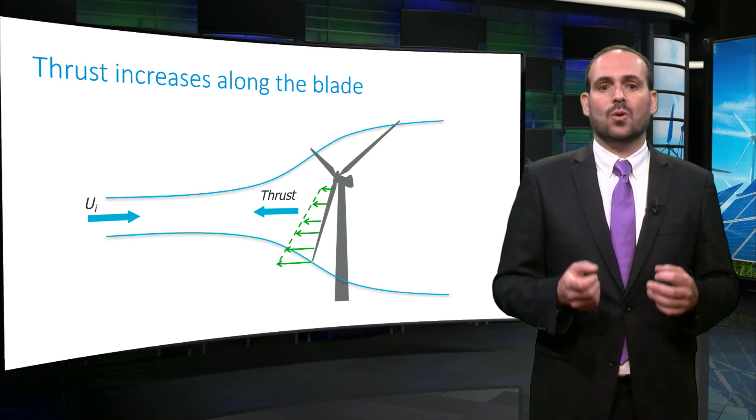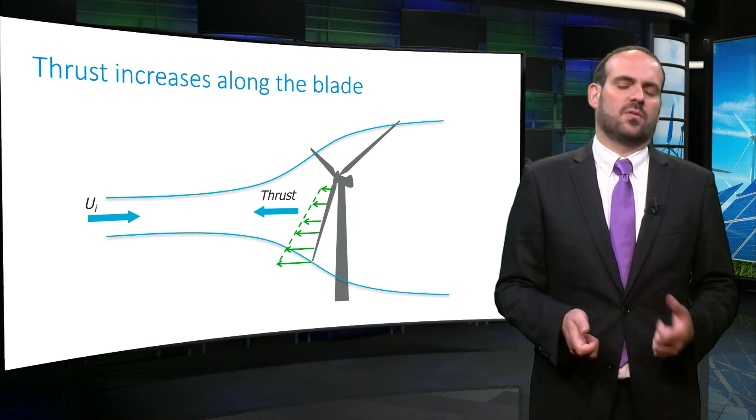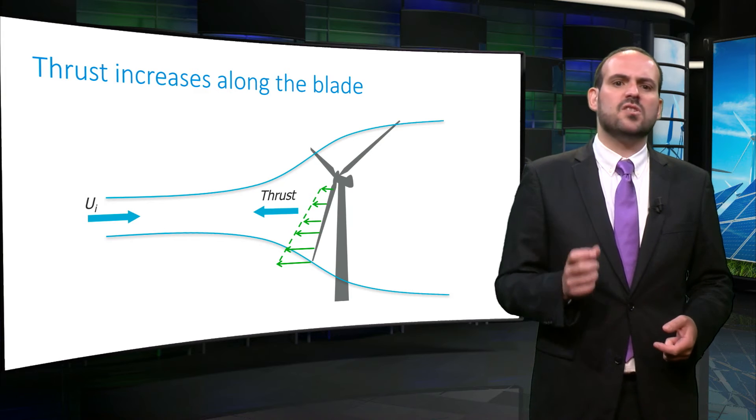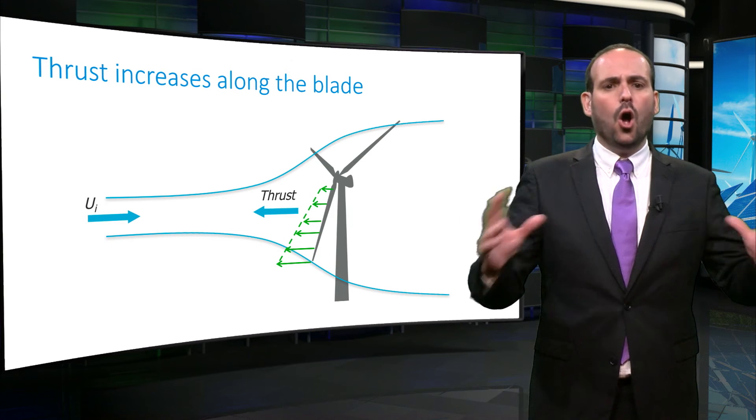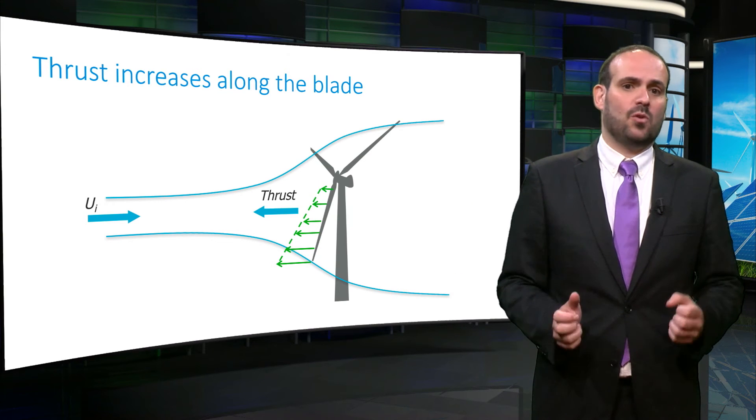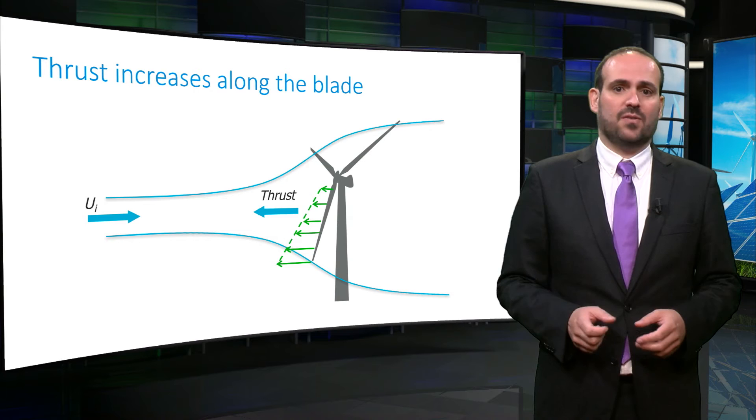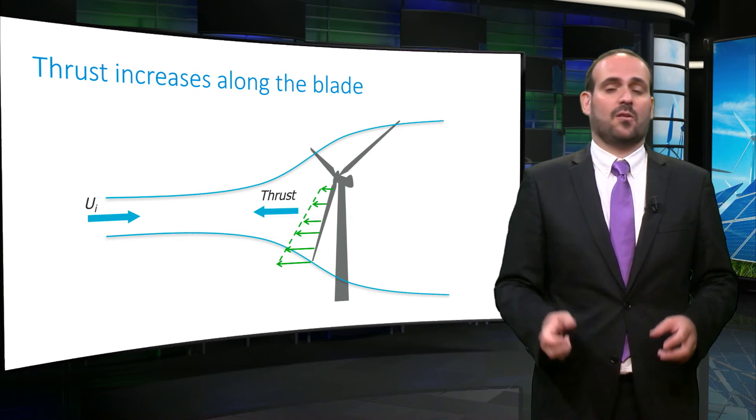We assume that there is an optimal extraction of energy, related to an optimal deceleration of the flow. And the most efficient way to do this is to extract the same percentage of energy from all the wind particles in the stream tube that crosses the area of the disk drawn by the blades as they rotate.